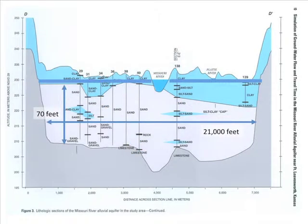How much water is in the alluvium itself? The sands and gravel averaging 70 feet thick, and a little less than four miles wide at this particular section. If we take just a one-foot-thick slice of the alluvium across the complete valley, contained within that slice is over two billion gallons of water — enough to serve 12 families for one year. That's just a one-foot slice of the aquifer thickness all the way across the valley.